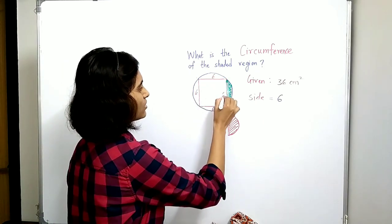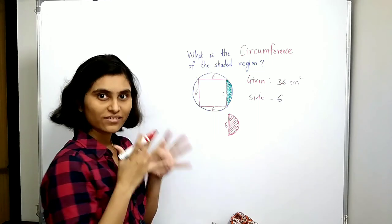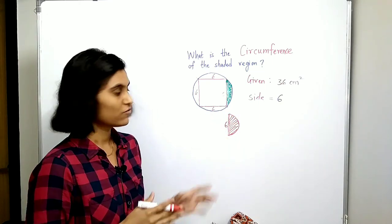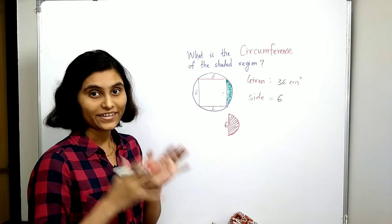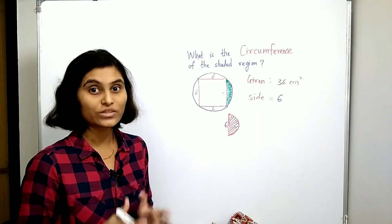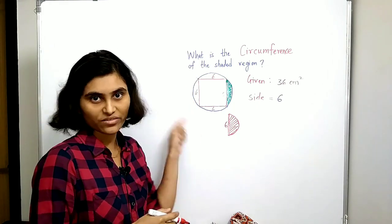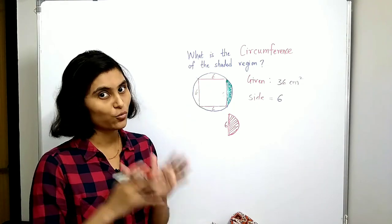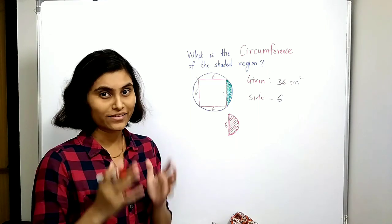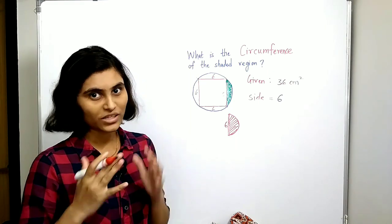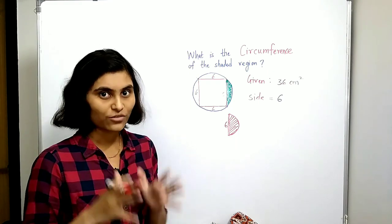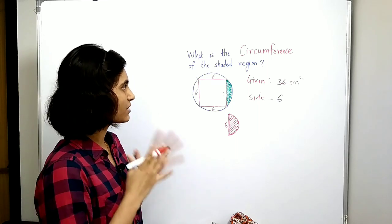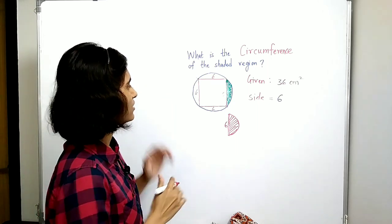Now let us find out what is the circumference of this arc. For that, let us first find out the circumference of the given circle, which is clearly 2πr, where r is the radius of the given circle. To find out r, let us do some construction.